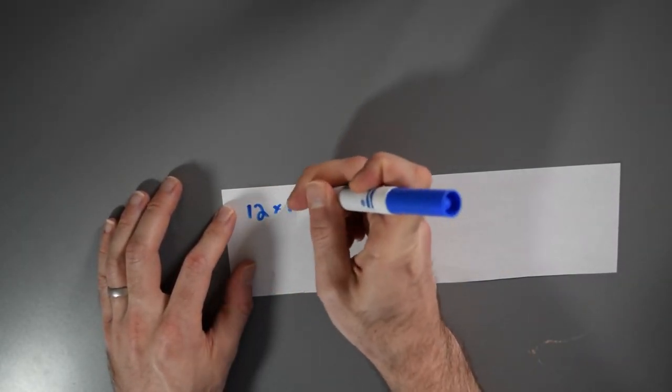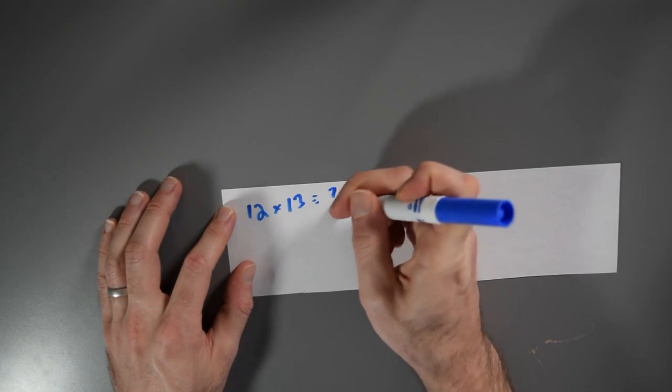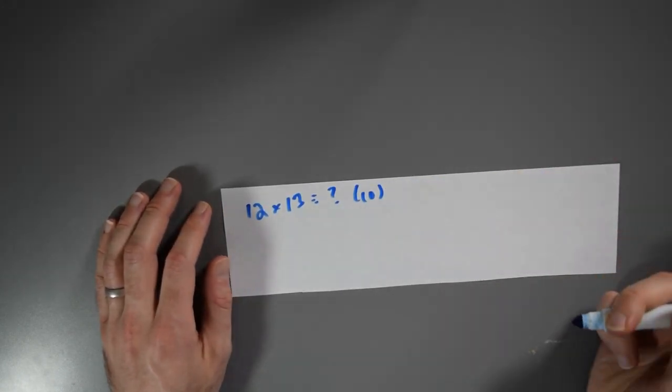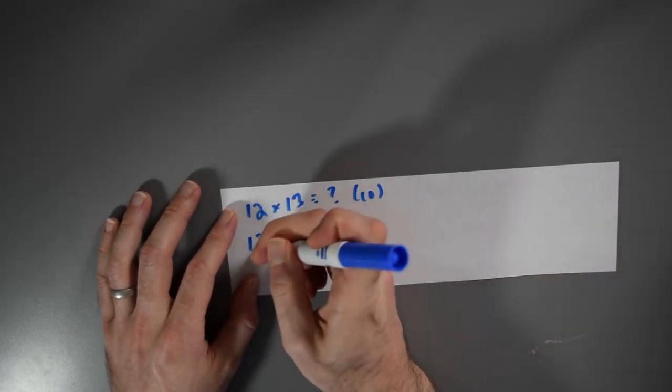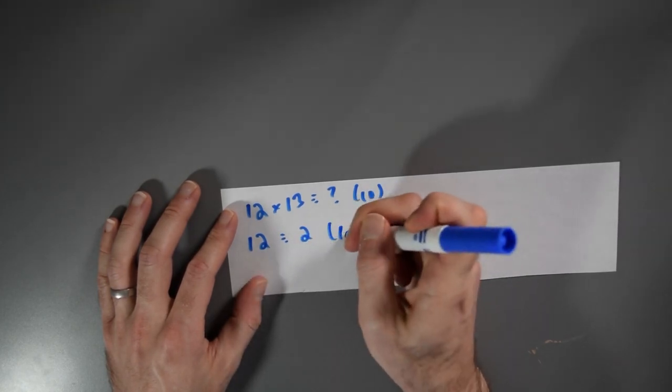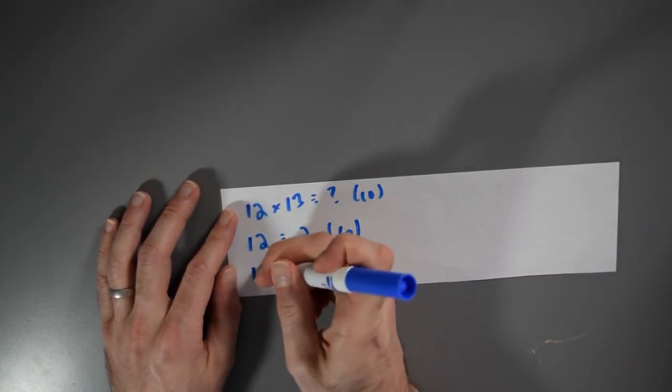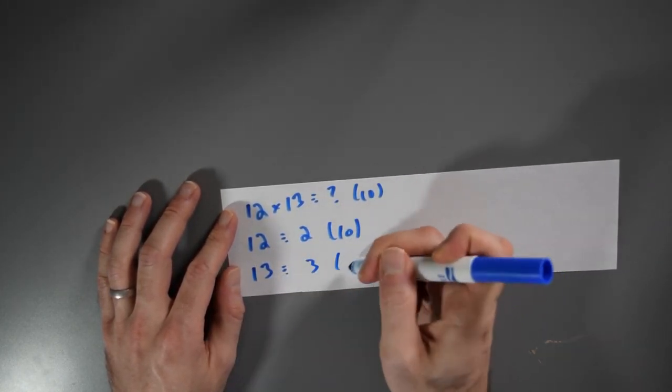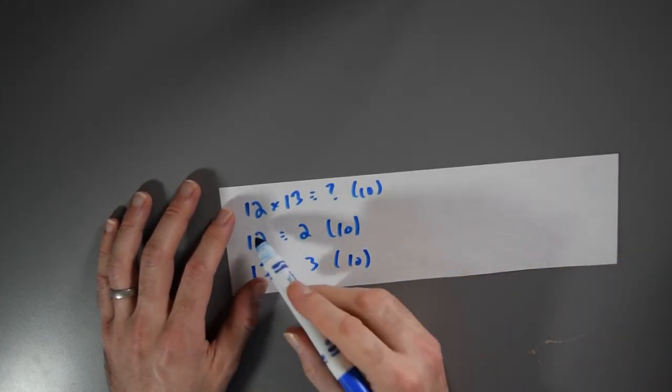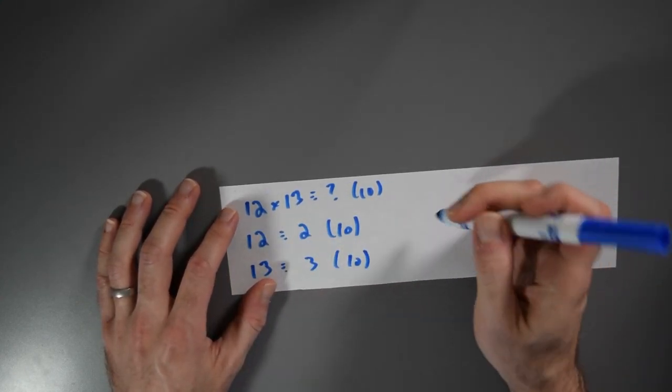12 times 13 is congruent to what modulo 10? Well, 12 is congruent to 2 modulo 10. 13 is congruent to 3 modulo 10.